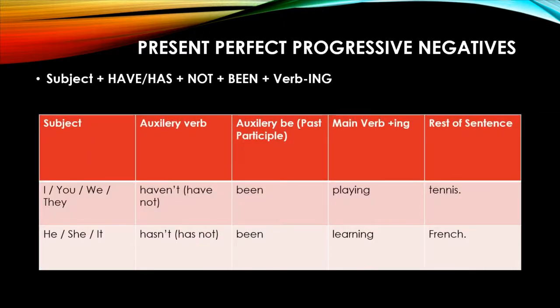See the example. Here is a table given below for different subjects. For first person, as you can see, I, you, we, or they - we will add have. With have we will make it negative, so we add not. So haven't or have not. Then the auxiliary in be, which is the past participle form, which is been. So 'I haven't been playing tennis.' Next one: 'He or she or it hasn't been learning French,' or 'has not been learning French.'